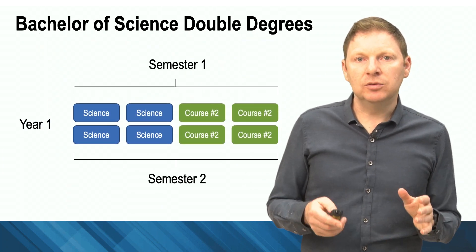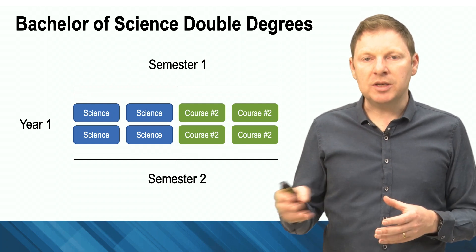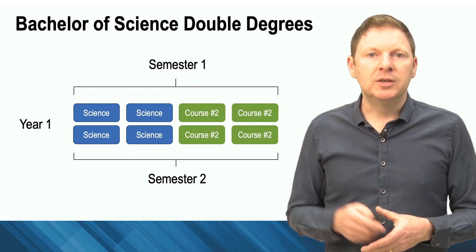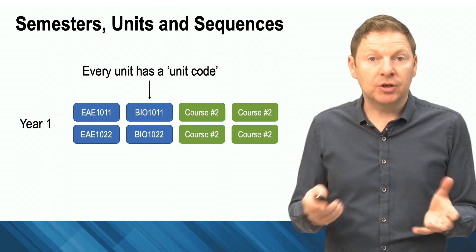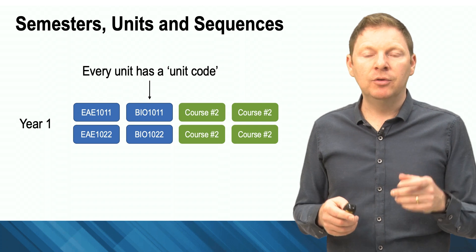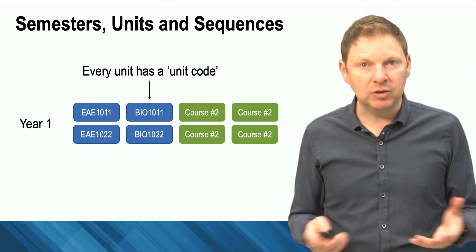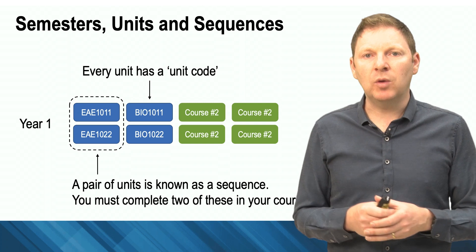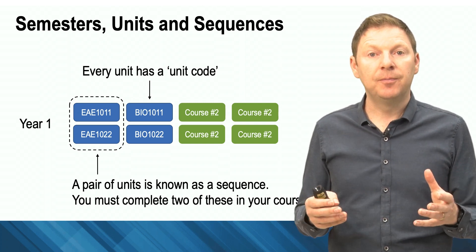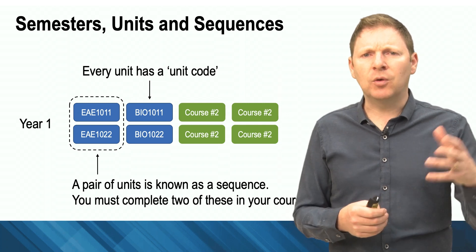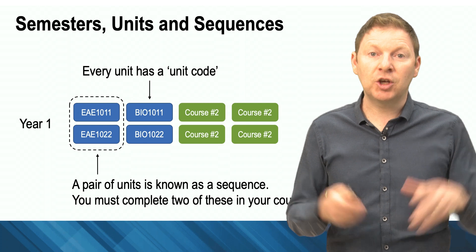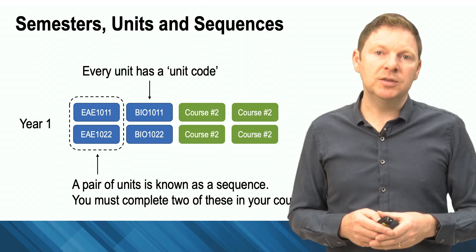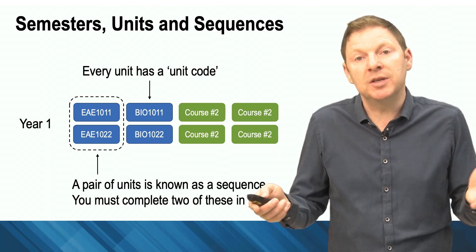So breaking it down, every single one of our units will be in either semester one or semester two. There's a small number of units that are available in the summer and winter, but most are in these two semesters. You can see that every single one of these things has a unit code. So the example I'm showing you here is BIO1011. You won't be surprised to see that's first year biology. And we also pair these things up. So the pair I've put together here is EAE1011 and 1022. We call this a sequence. So it's earth, atmosphere and environment - think volcanoes, think environmental science - all put together in a coherent pair of units. Every single student must do two sequences of first year studies somewhere in their course. And most students will do this in their first year.